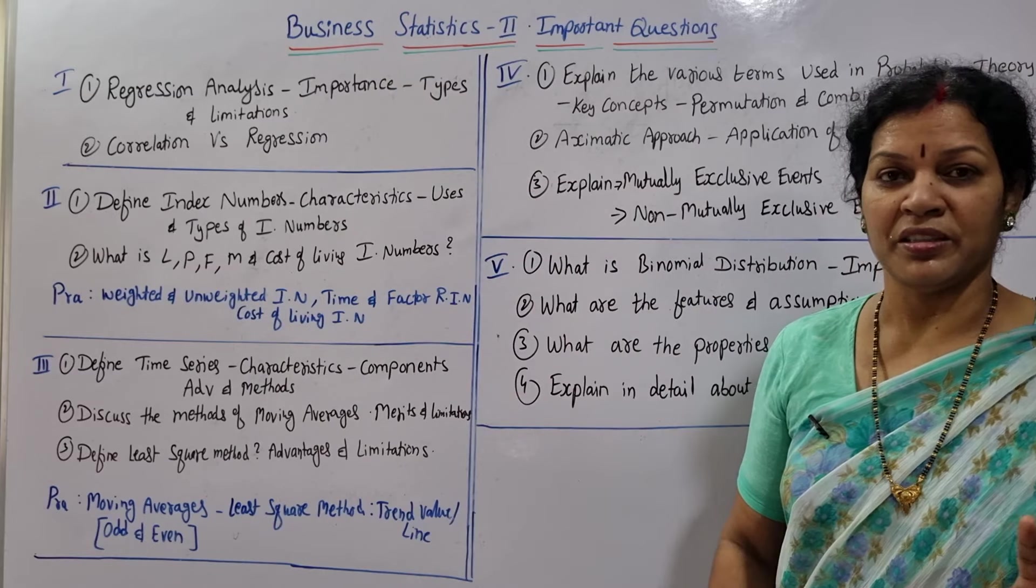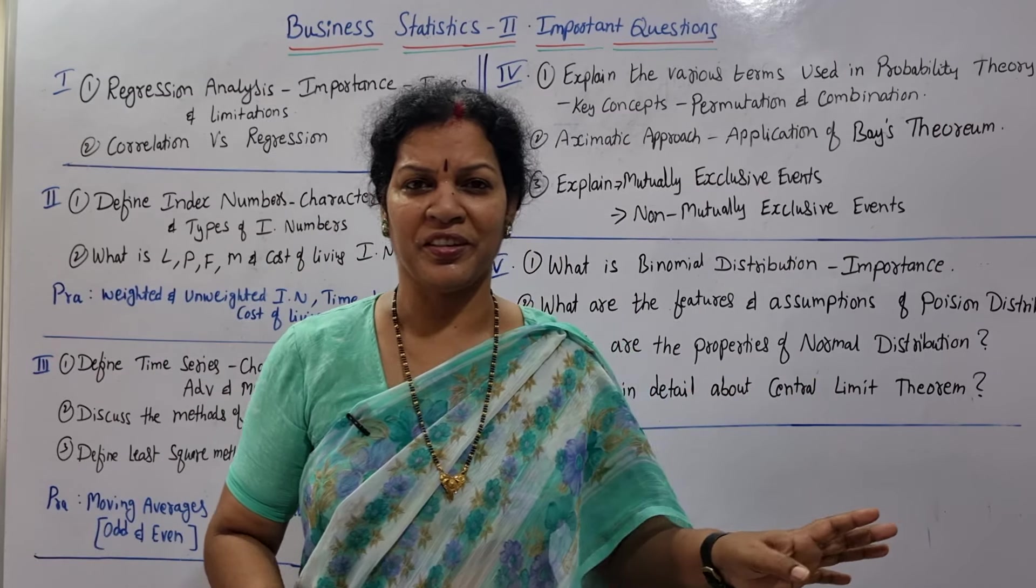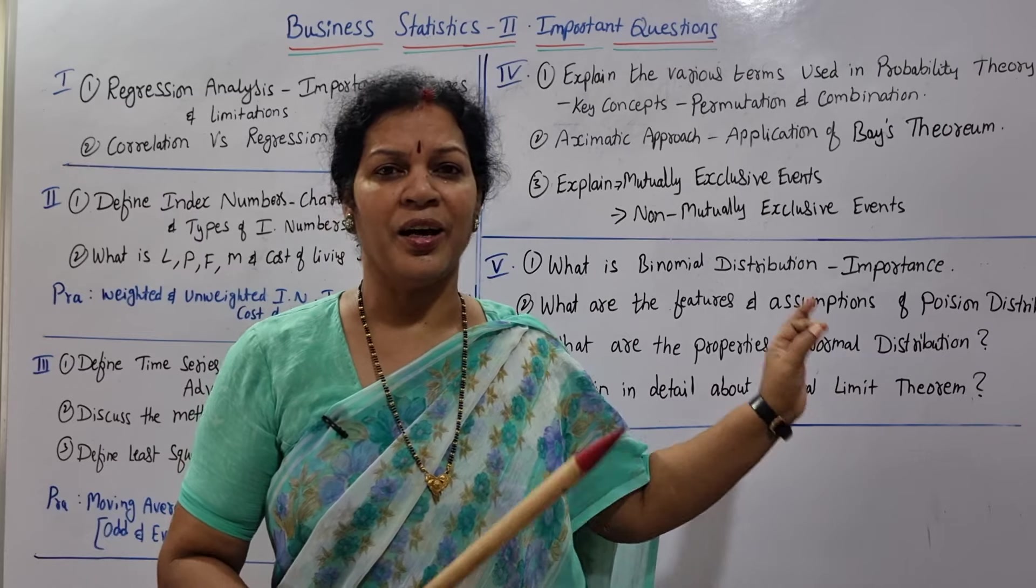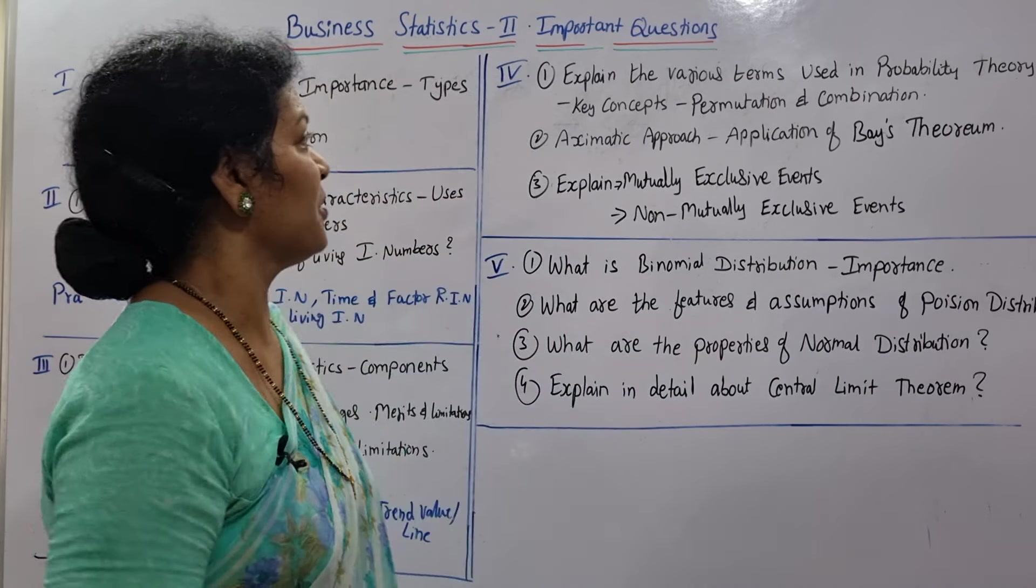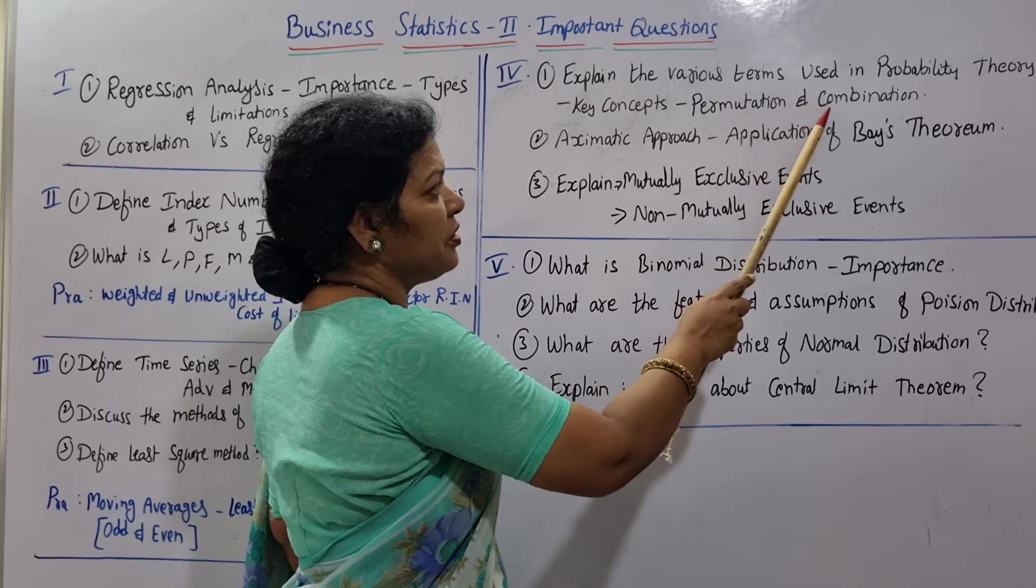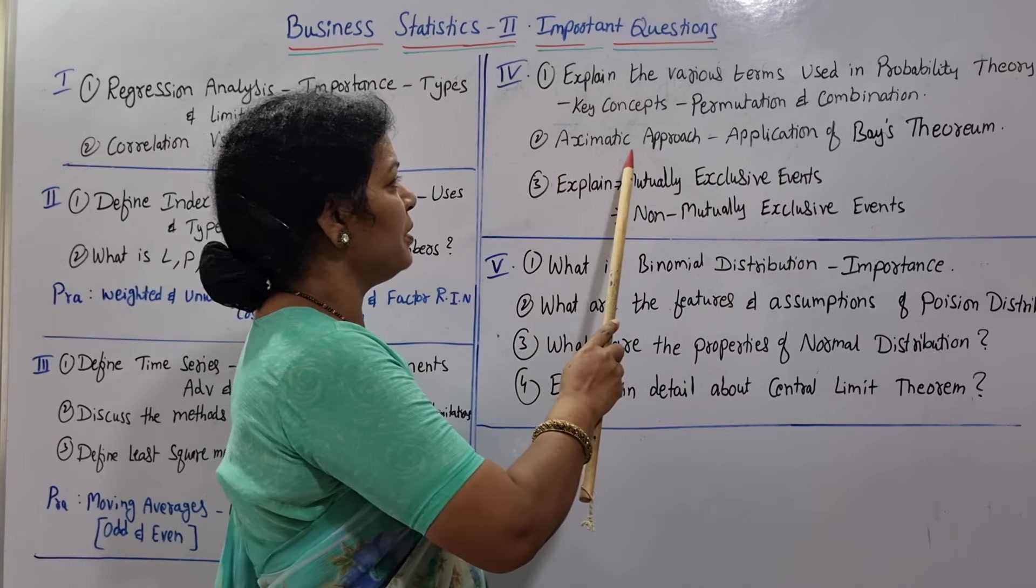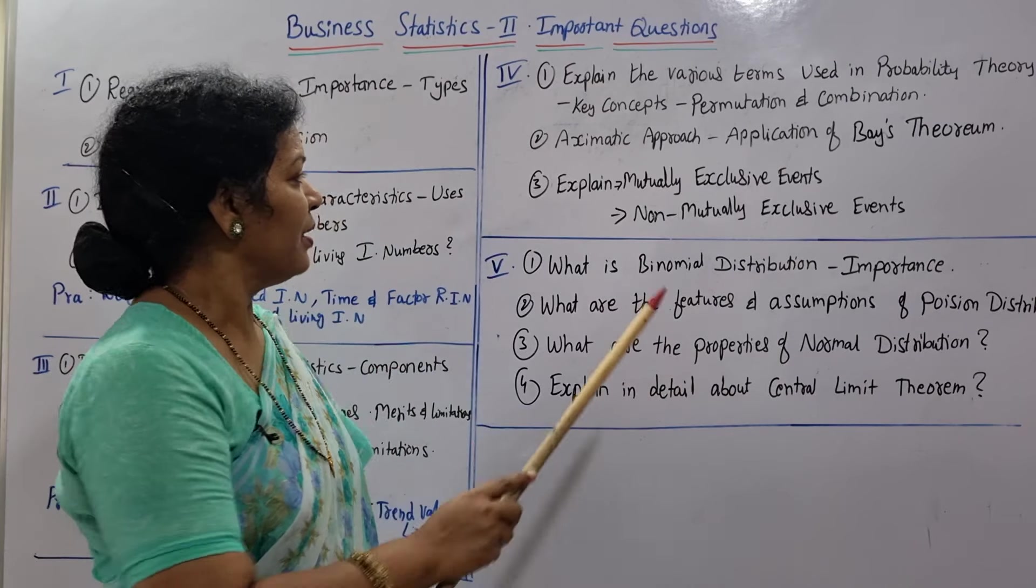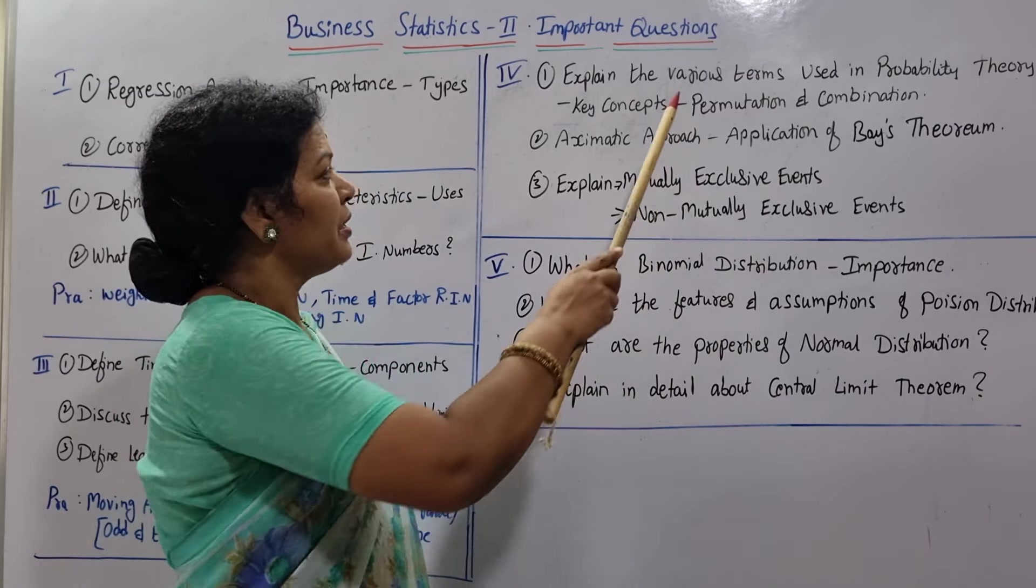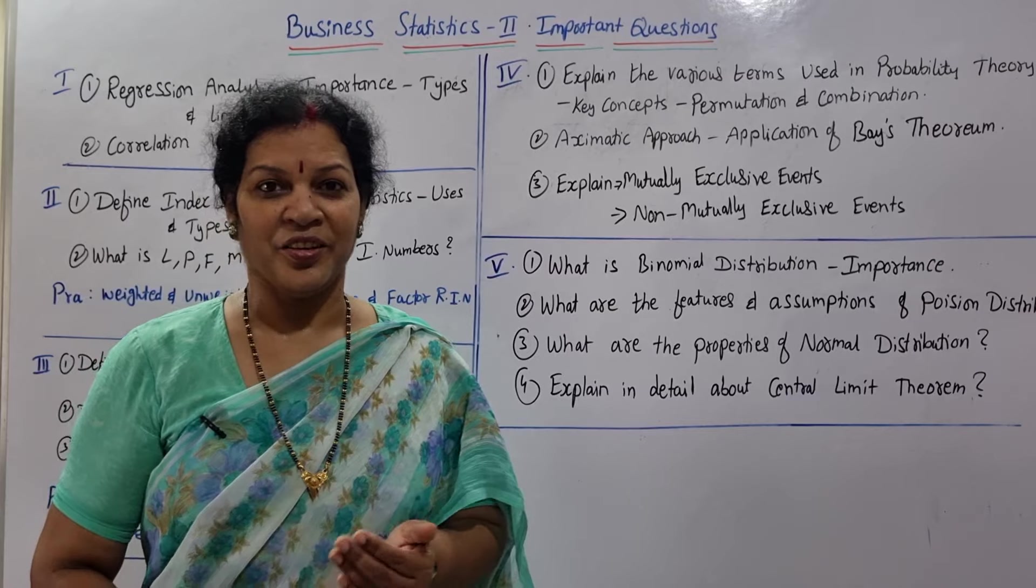These three units are business statistics. Next, fourth and fifth units, these two are mathematics point of view. In fact, to be frank, I am not much perfect in mathematics, that is the reason I did not cover. But anyway, I'm sure in future I'm going to learn these two units, I'll upload it in our channel. Right now I can give you important questions: first one, explain the various terms used in probability theory, key concepts, permutations and combination - one question very important. Second one: axiomatic approach, application of Bayes' theorem. And third one: explain mutually exclusive events and non-mutually exclusive events.